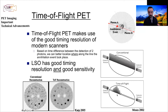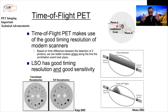You might wonder: shouldn't better timing resolution also improve spatial resolution? If you knew exactly where each event came from, you might not need tomographic reconstruction at all — just detect a pair of coincident photons, place the event at the known location, and build up the image directly. But that's not exactly the case with current detectors.